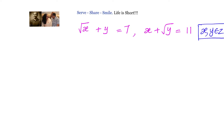We have two equations: √x + y = 7 and x + √y = 11. We are told that x and y are positive integers.